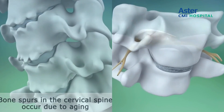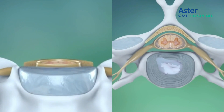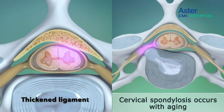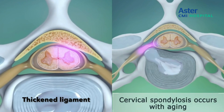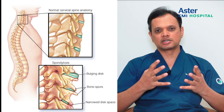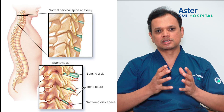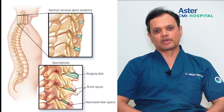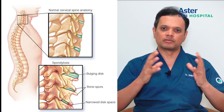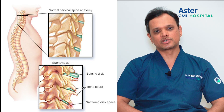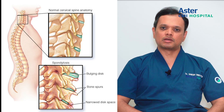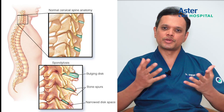These changes can happen in the bone, in the disc, or in the joints between the two bones. As a result of all these changes, the entire gamut comes under the term cervical spondylosis. So it is not just one disease but a disorder which consists of several individual diseases.